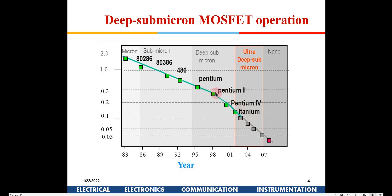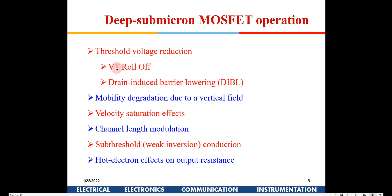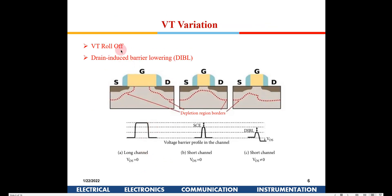There are certain short channel effects we will examine: threshold voltage reduction, mobility degradation, velocity saturation, channel length modulation, sub-threshold conduction, and hot electron effects — like VT roll-off.